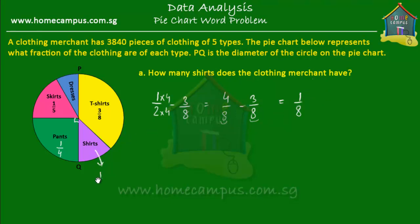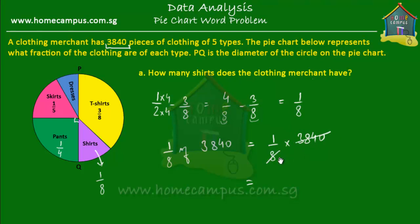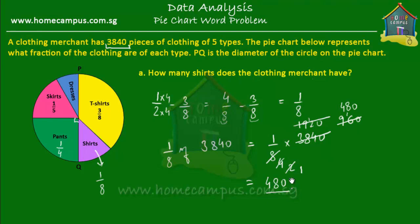So one eighth of all the clothing is shirts. If there are 3,840 pieces of clothing altogether, then the number of shirts is one eighth of 3,840. Simplifying: divide 3,840 by 8 step by step — the result is 480. So there are 480 shirts. That's the answer to the first question.